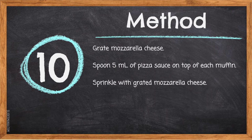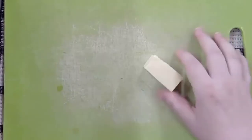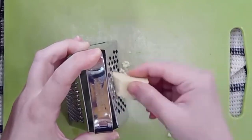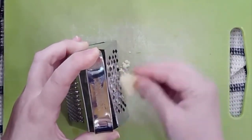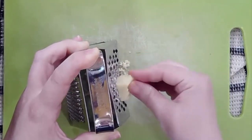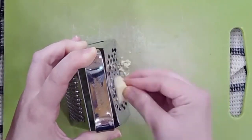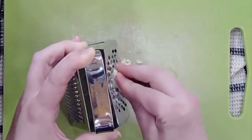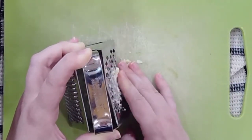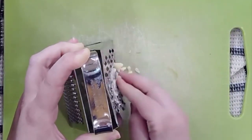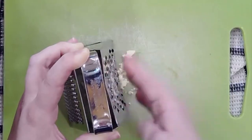Step ten: grate mozzarella cheese and spoon 5 milliliters of pizza sauce on top of each muffin, then sprinkle with grated mozzarella cheese. Grate the mozzarella on the large circle side of the grater going very slowly, being mindful of your fingertips. Mozzarella cheese is very soft, so when you get to the end it is easy to push it through the grater with a flat hand. Make sure to get all the cheese out from inside the grater as it is so soft it sticks.